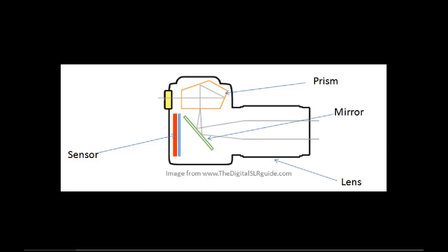We start with basic understanding of the camera. First things first, I'm going to explain how the camera itself is set up. If you have a look at this diagram, this is more or less like your DSLR if you dissect it. We've got a sensor here — that's the portion where your image is stored. We've also got the prism, the mirror, and your lens.